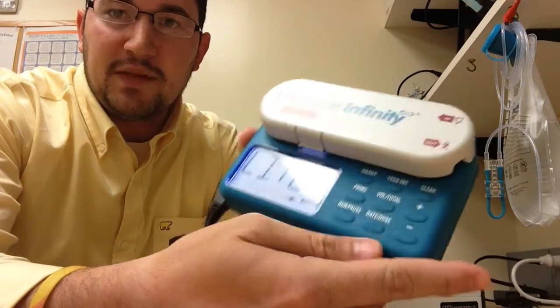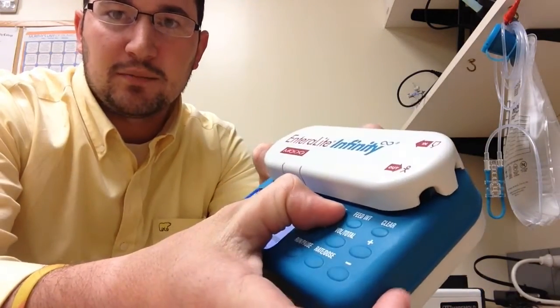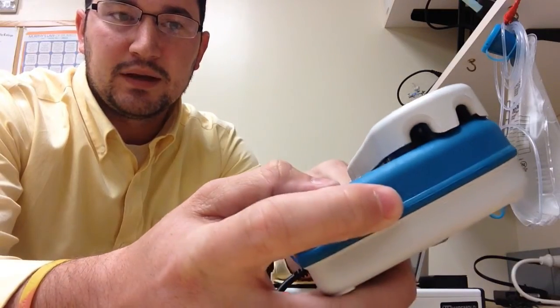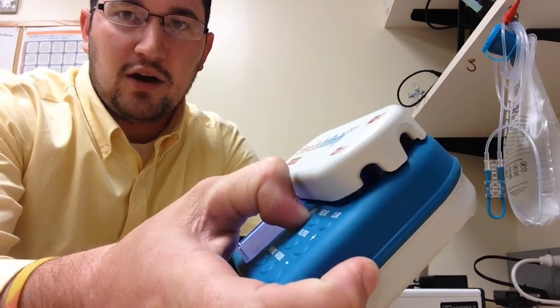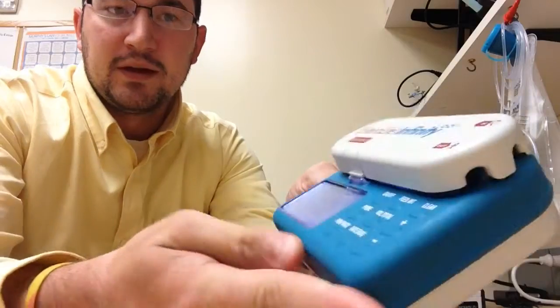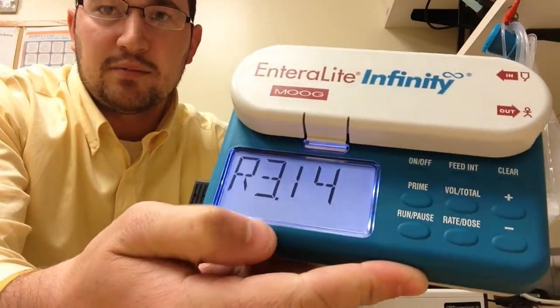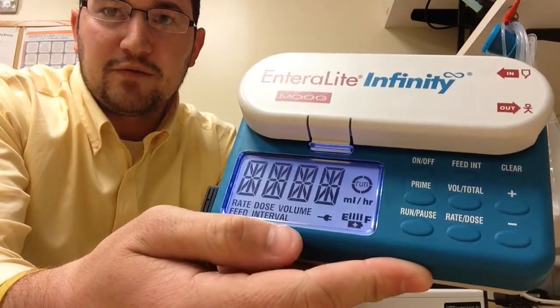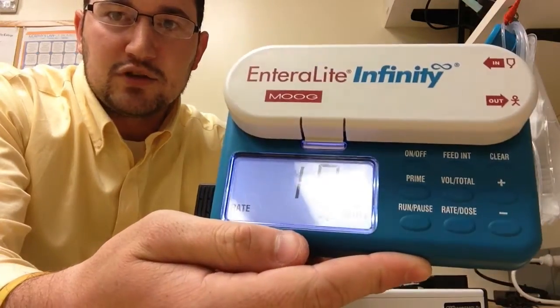So once you're finished updating your settings, you just want to turn the pump back off and turn it back on. The pump scrolls through serial number, information, and then it comes on.